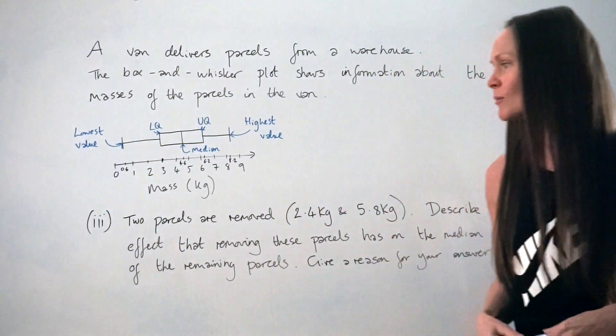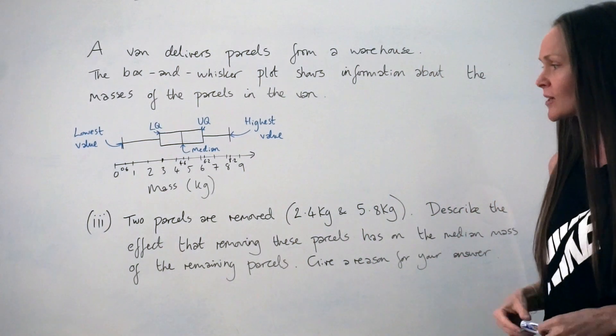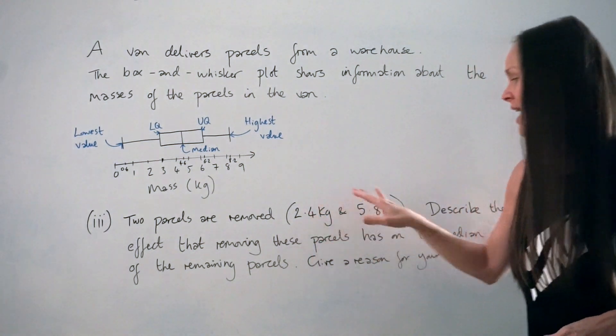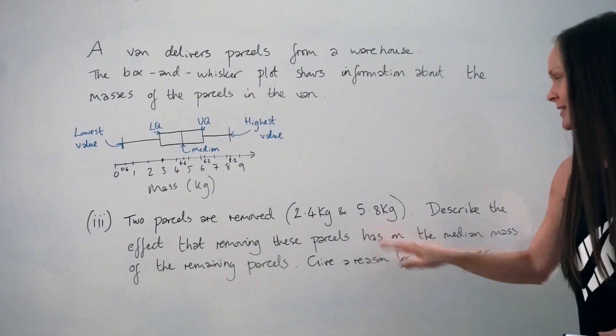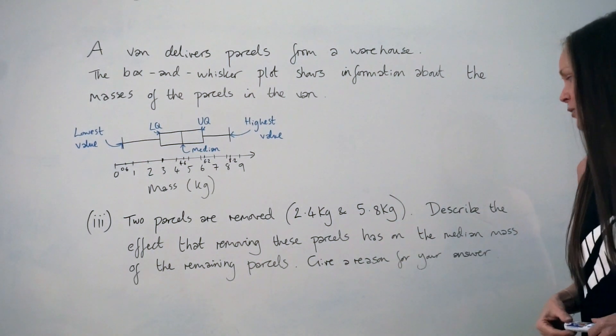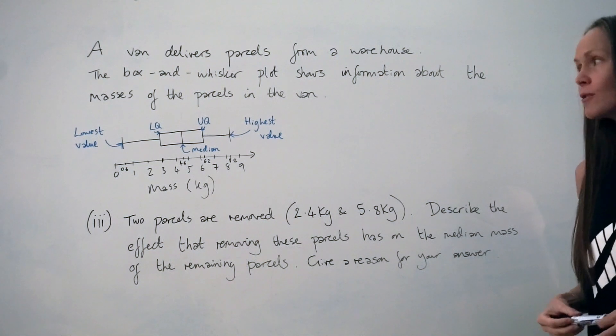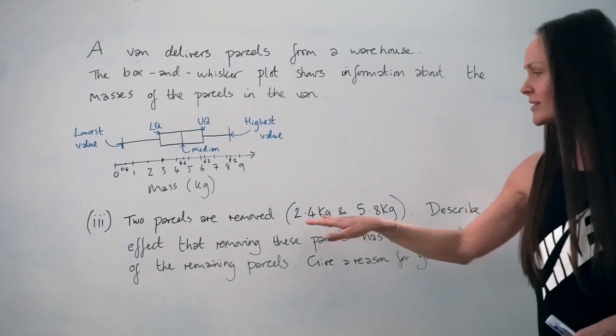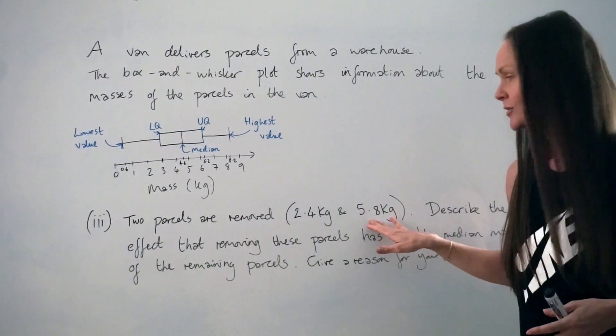In the final part of this exam question, it says that two parcels are removed. One of the parcels has a mass of 2.4 kilograms and the other one has a mass of 5.8. It says describe the effect that removing these parcels has on the median mass of the remaining parcels. Give a reason for your answer.